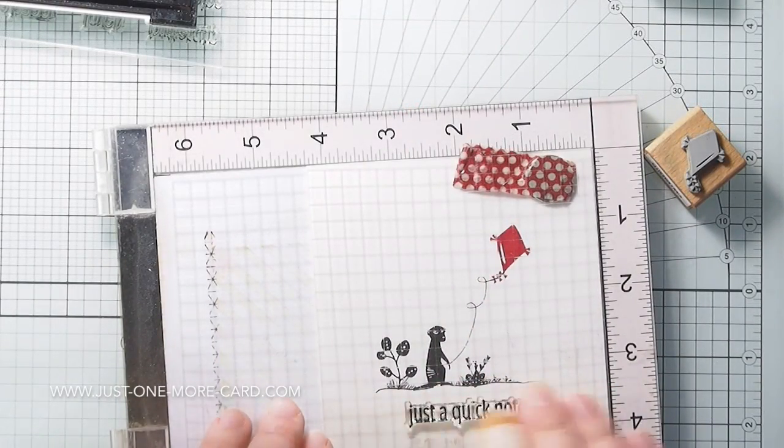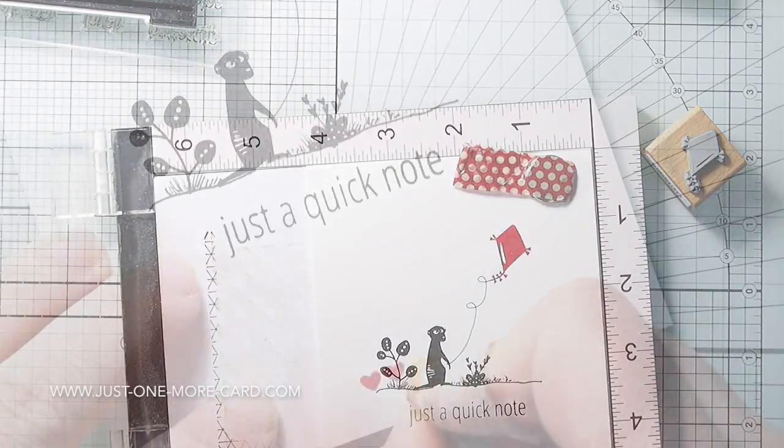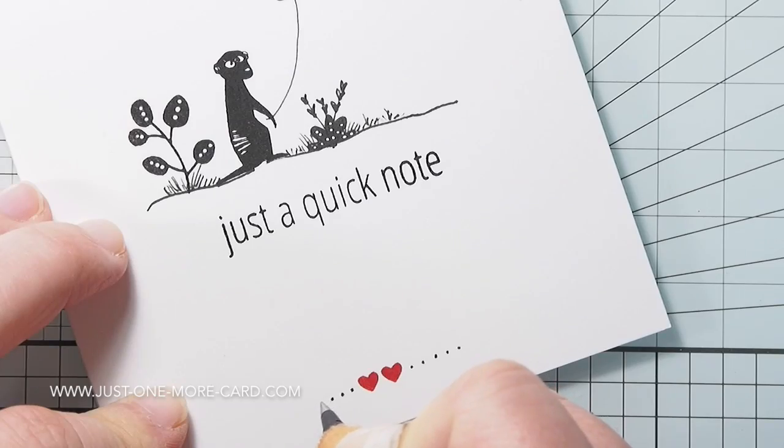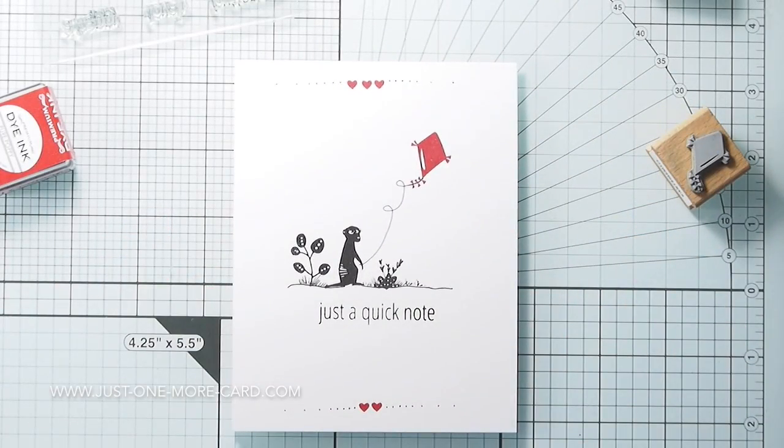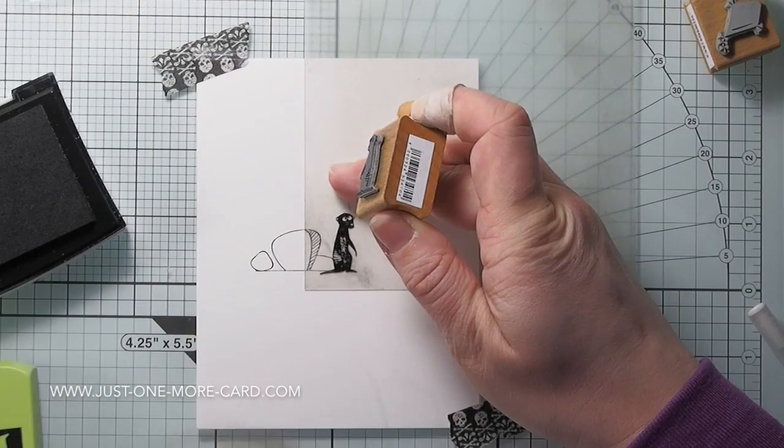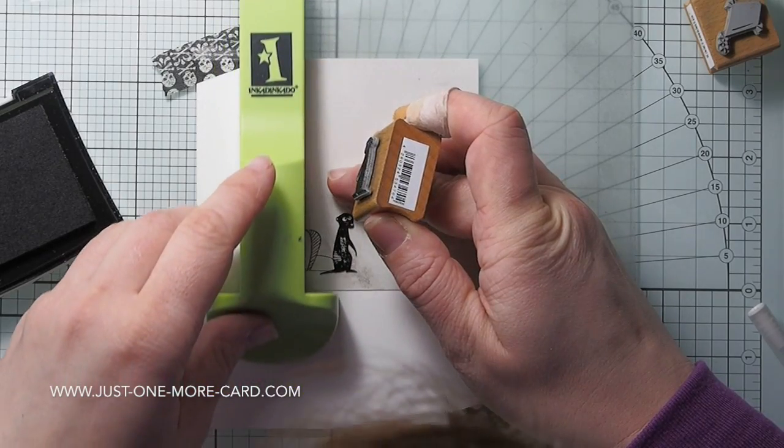Basically using just a few stamps. Also quickly added a sentiment here. I stamped hearts at the top and at the bottom. And again, used some dots to kind of frame the image so it doesn't just float on this white cardstock. Again, this card took like three or four minutes to complete.